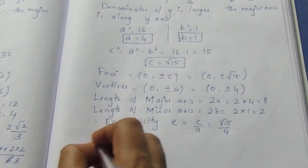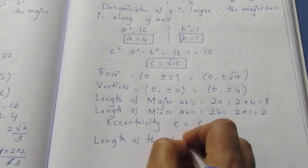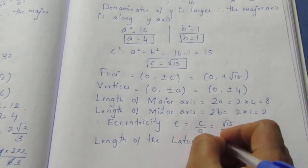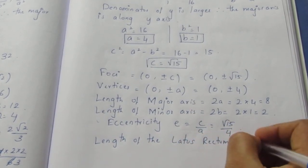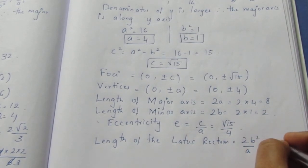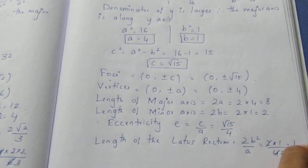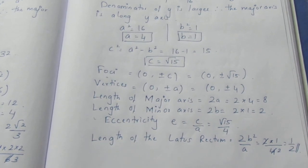Now next length of the latus rectum which is 2b²/a = 2 × b² is 1, so × 1 by a is 4. This we can cancel. It becomes 1/2.